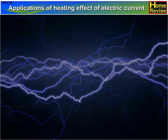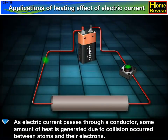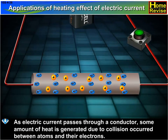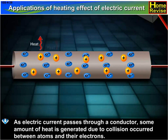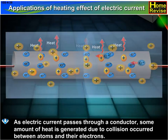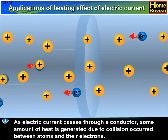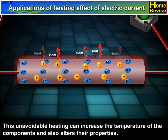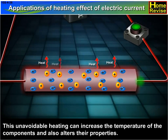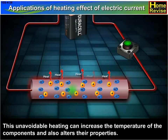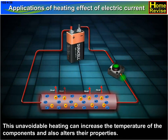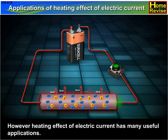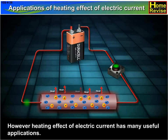Applications of Heating Effect of Electric Current. As electric current passes through a conductor, some amount of heat is generated due to collisions occurring between atoms and their electrons. This unavoidable heating can increase the temperature of the components and also alters their properties. However, the heating effect of electric current has many useful applications.